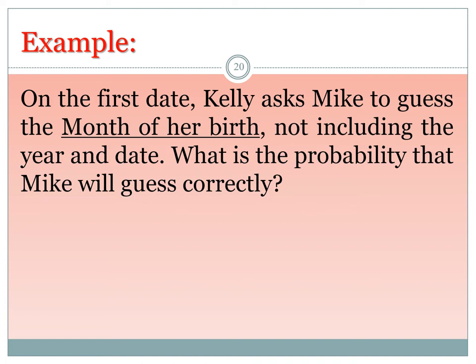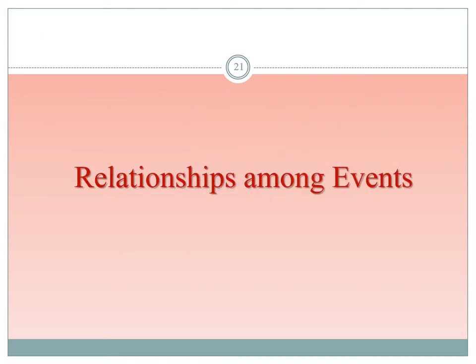Another classical probability example: on a first date, Haley asks Mike to guess the month of her birth, not including the year or date. What is the probability Mike will guess correctly? There are 12 total possible months — January through December — and only one correct month, so the probability is 1 over 12.